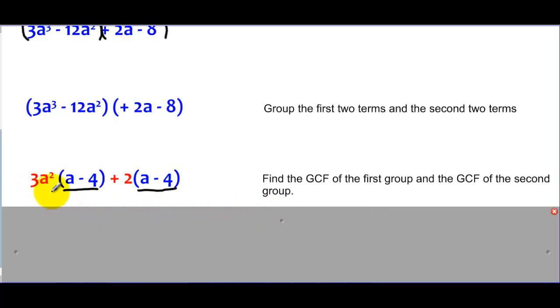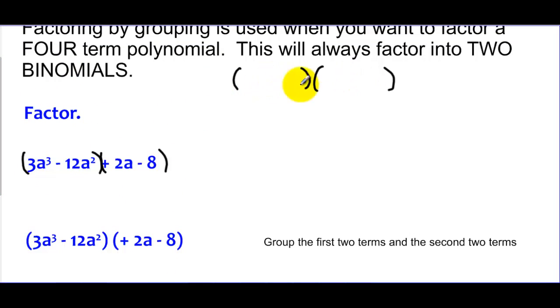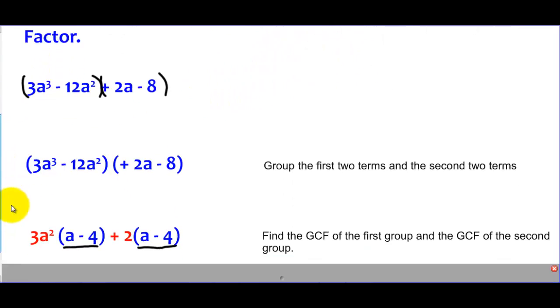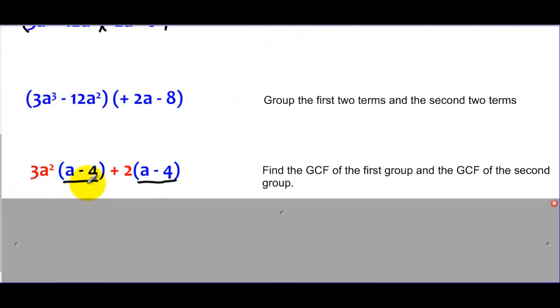So what we're going to do once we have the GCFs factored out is we're going to regroup. One of the two factors, one of these two parentheses—I have these two parentheses at the top that I have to fill in. One of them is going to be that repeating factor. So one of my factors is A minus four.